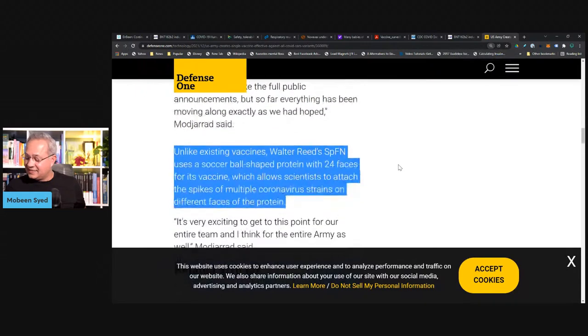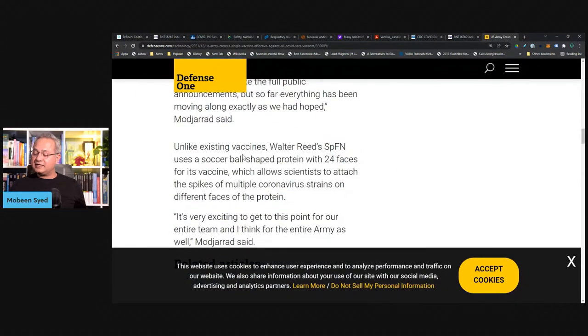Unlike existing vaccines, Walter Reed's SPFN uses a soccer ball-shaped protein with 24 faces for its vaccine, which allows scientists to attach the spikes of multiple coronavirus strains on different faces of the protein.